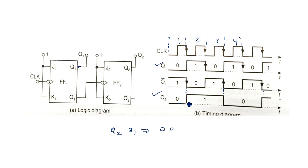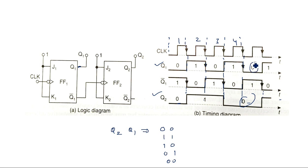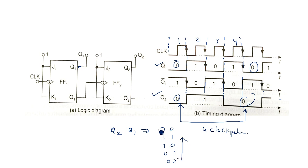Remaining connections are the same. Q1 toggles for every falling edge of the clock signal. Q1-bar is the complement of Q1. Wherever the negative edge occurs in Q1-bar, the second flip-flop toggles Q2. Q2 and Q1 outputs give: 0, 0 initially; then 1, 1; then 1, 0; then 0, 1; then back to 0, 0 — descending order. Totally 4 clock pulses are counted. This is the asynchronous counter with 2-bit ripple up counter as well as down counter. Thank you.